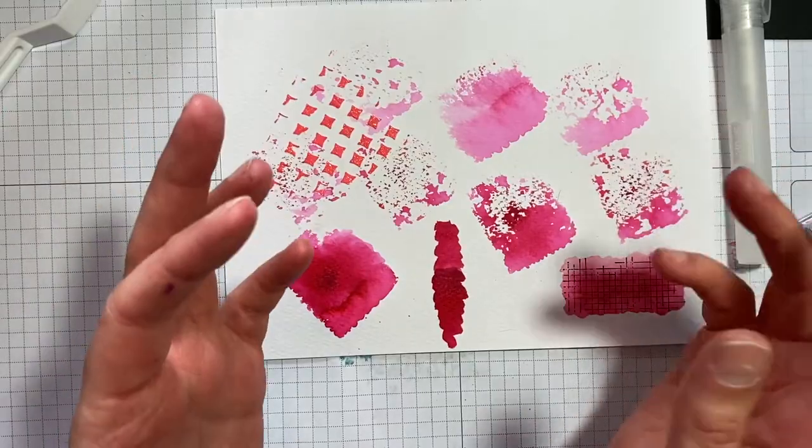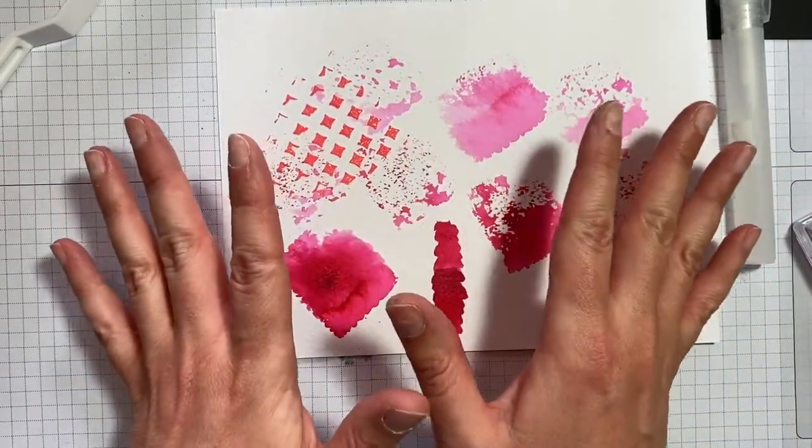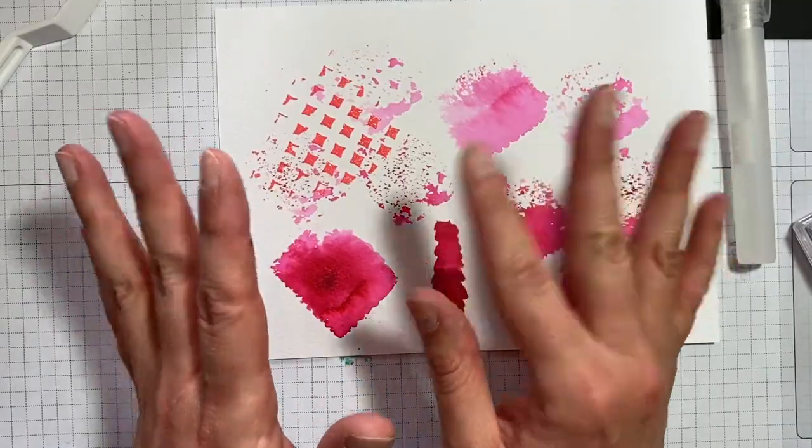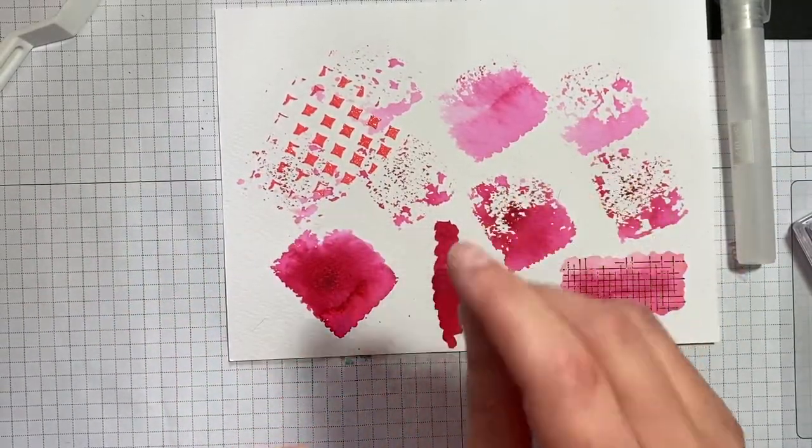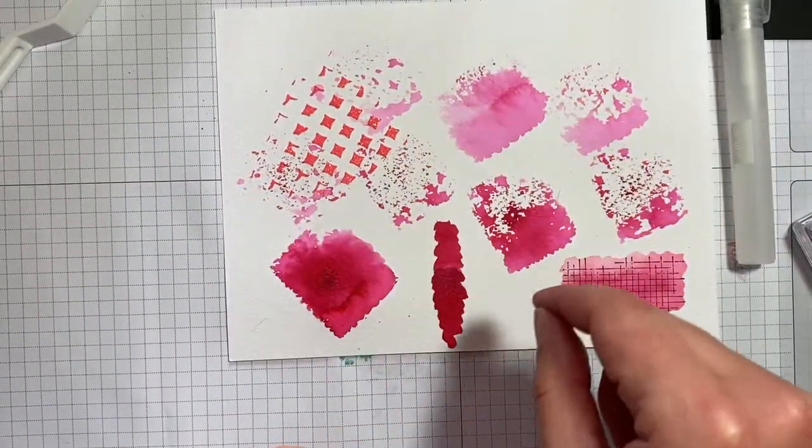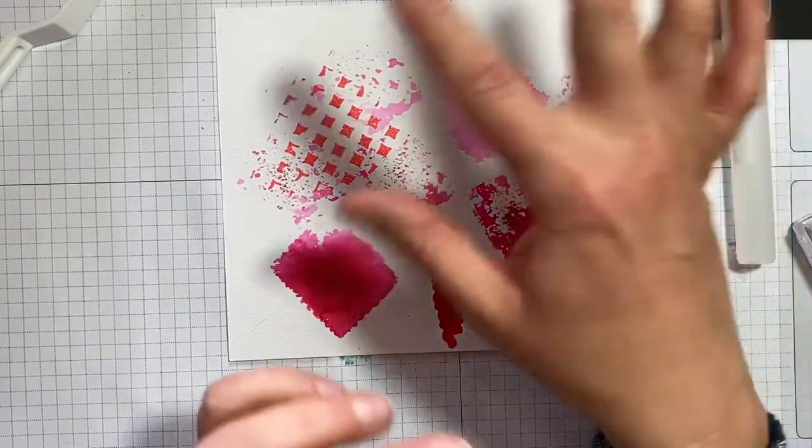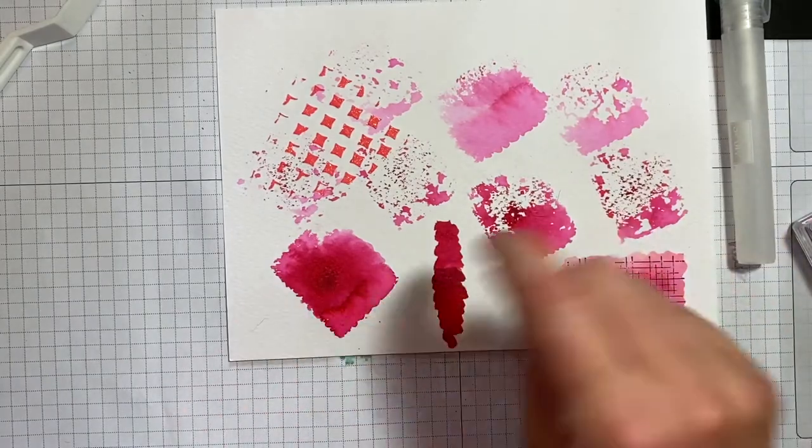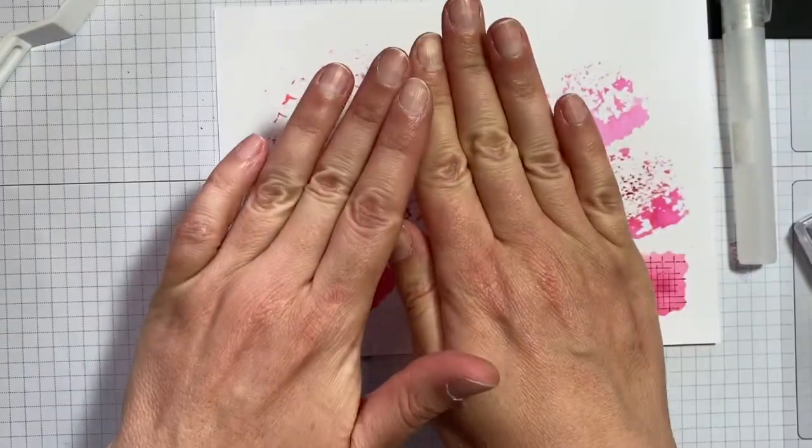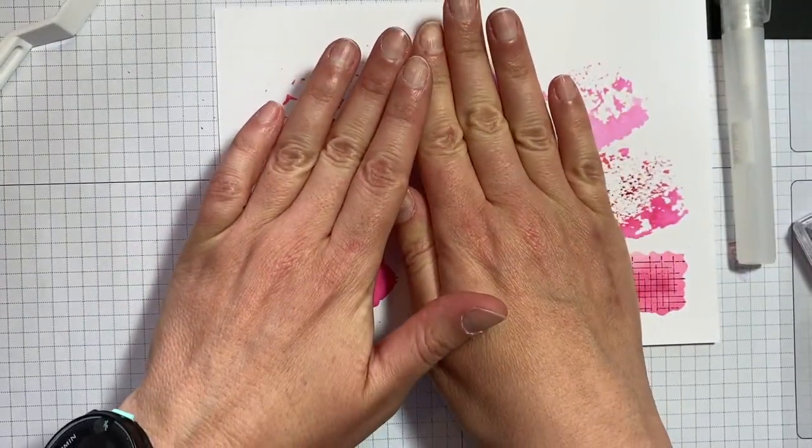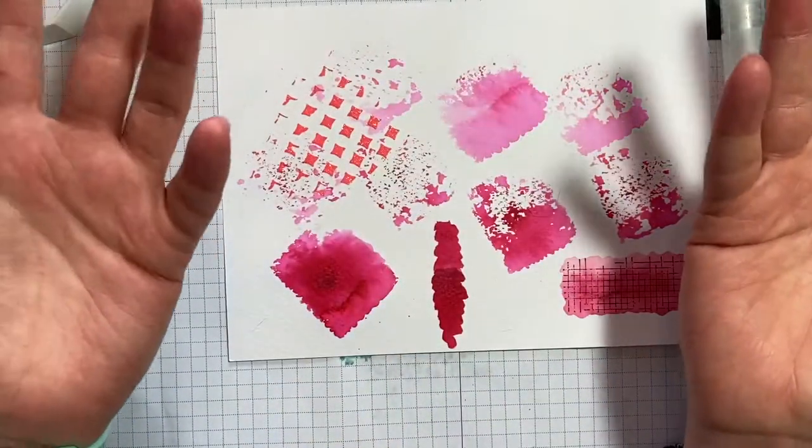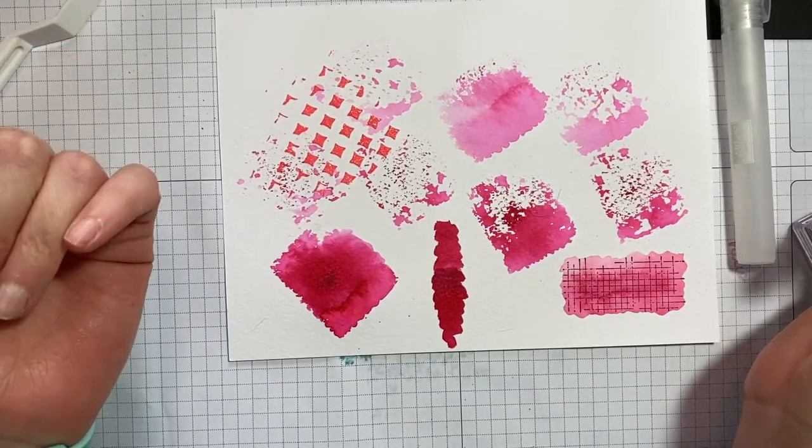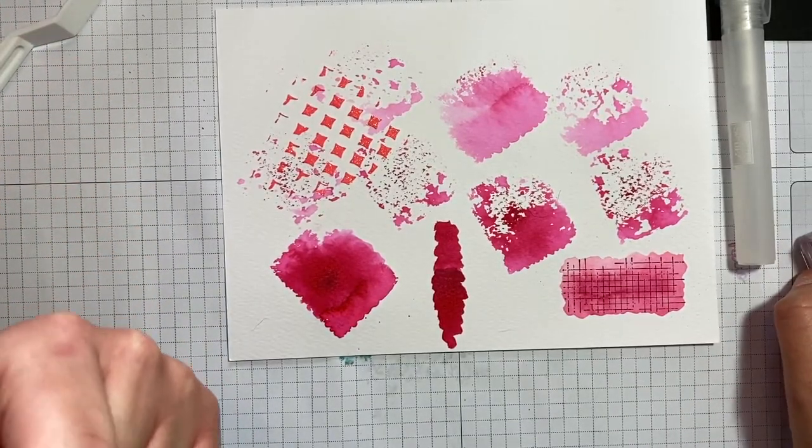Similar thing. You spread some shaving foam out onto a glass mat or maybe your silicon craft sheet. Something like that. You put a few blobs of reinker, either just one color or multi colors. You kind of spread it about a bit and then you pop your card into the shaving foam and you get some really cool patterns. It does look really good. Don't get me wrong. It looks great. But it is messy.